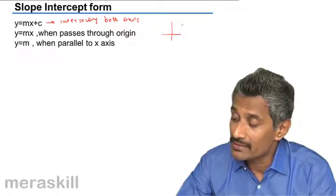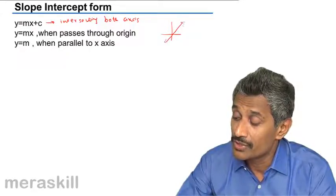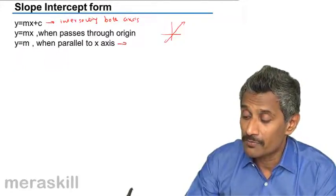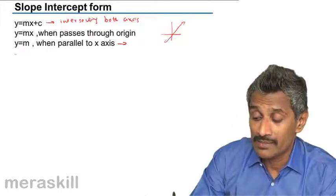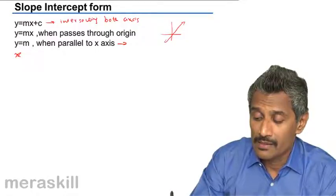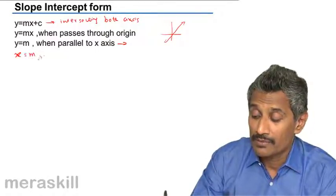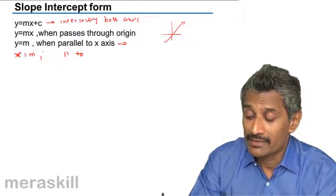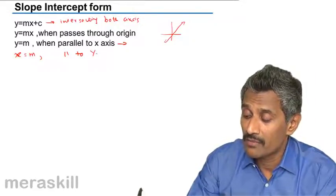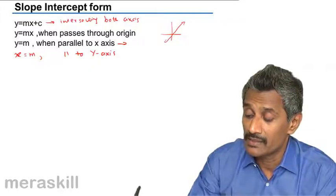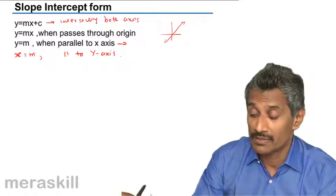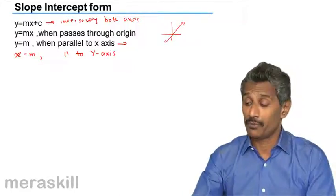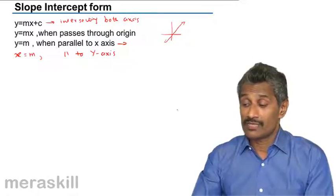Y is equal to mx could be a line like this, which passes through the origin. It doesn't intersect the x and y-axis individually. Y is equal to m will be parallel to x-axis. X is equal to m is parallel to the y-axis. That is, y is some constant, x is some constant, then it is going to be parallel to x-axis, parallel to y. This is a review of the various types of equations or the various types of lines.